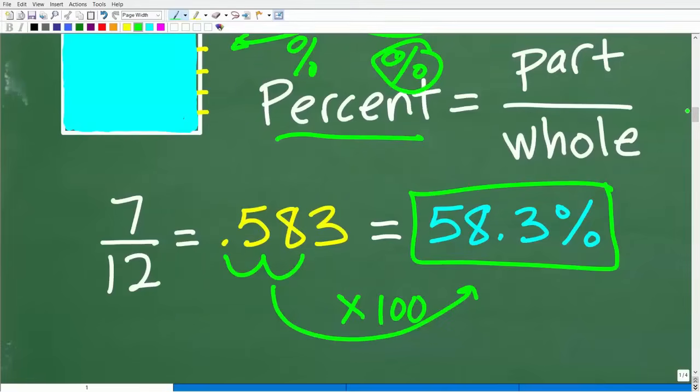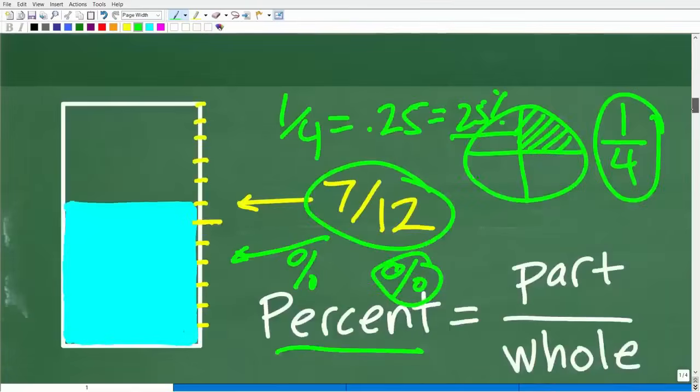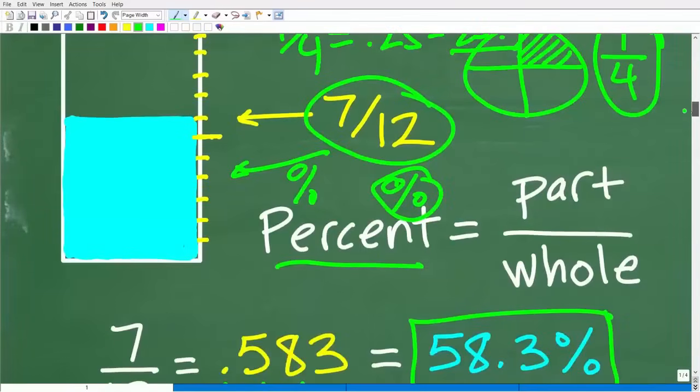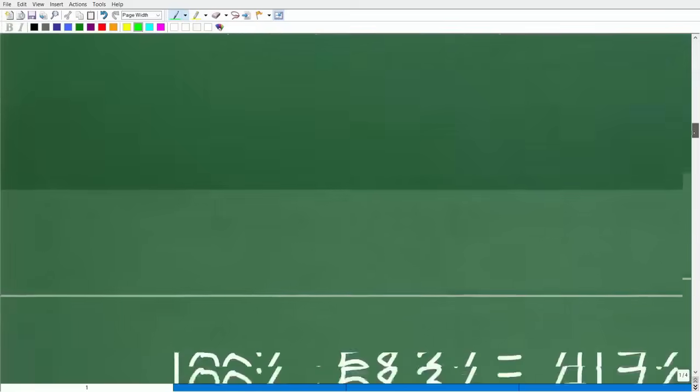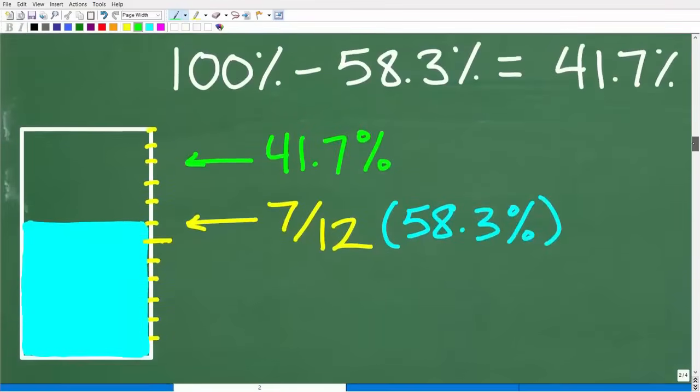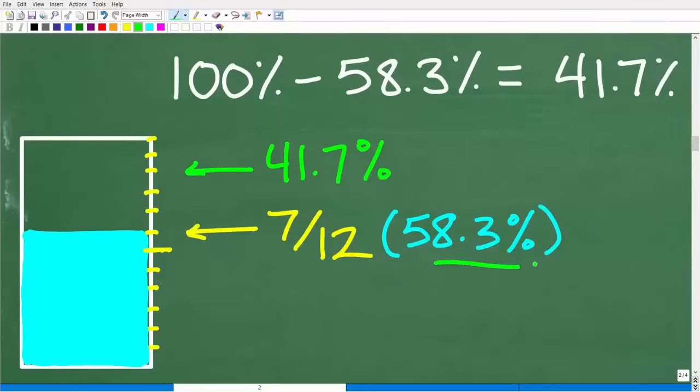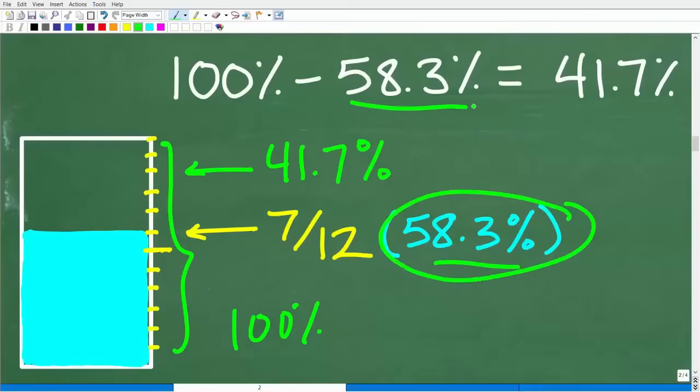Now, again, there's different approaches to answering this question, but this would be a pretty easy question to answer if I said, hey, the cup is 58.3% full, what percent of the cup is empty? Because hopefully a lot of you will say, oh, that's pretty easy. To get that answer, all I have to do is subtract 58.3% from 100, right? Because the entire cup here is 100%, and if it's 58.3% full, if I subtract that out, that means the difference there is 41.7% empty.